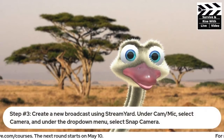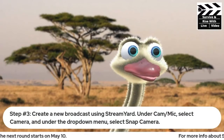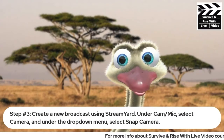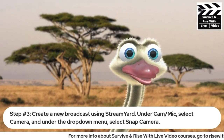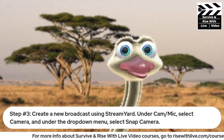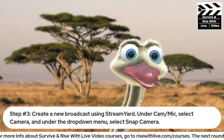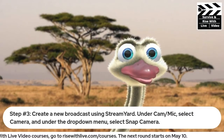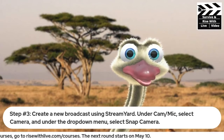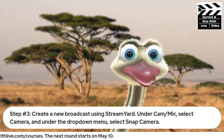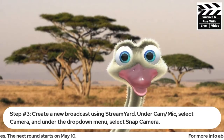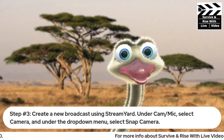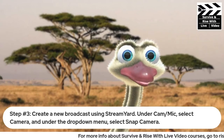Step number three: create a new broadcast using StreamYard. Under the settings for cam and mic — which appear when you create a new broadcast at the bottom — click cam and mic, then select Camera. Under the drop-down menu you will see options for your regular cameras as well as Snap Camera. Select Snap Camera.